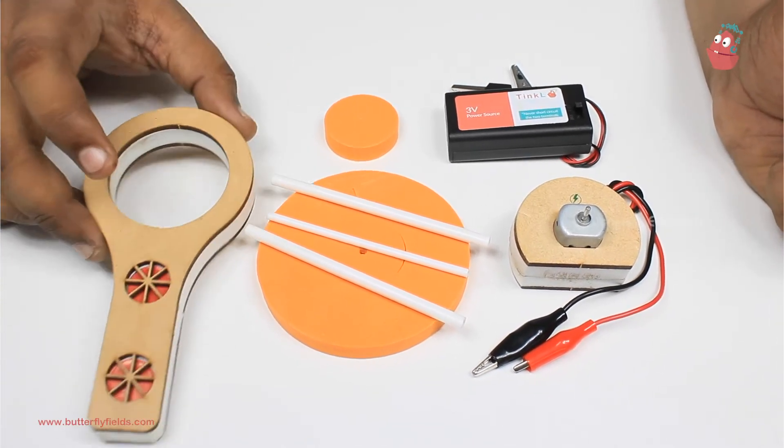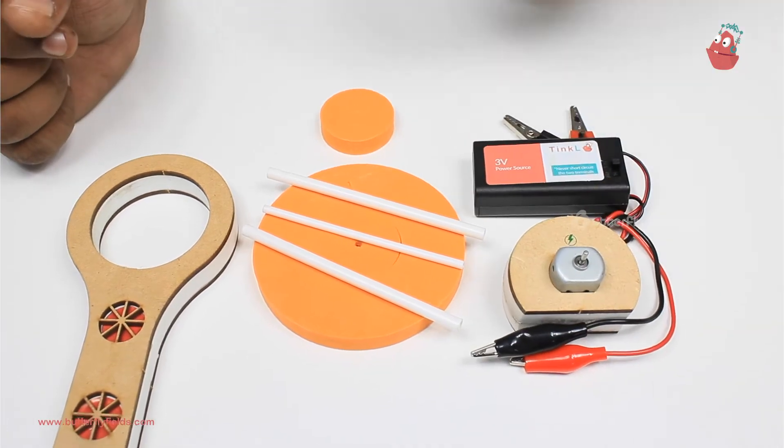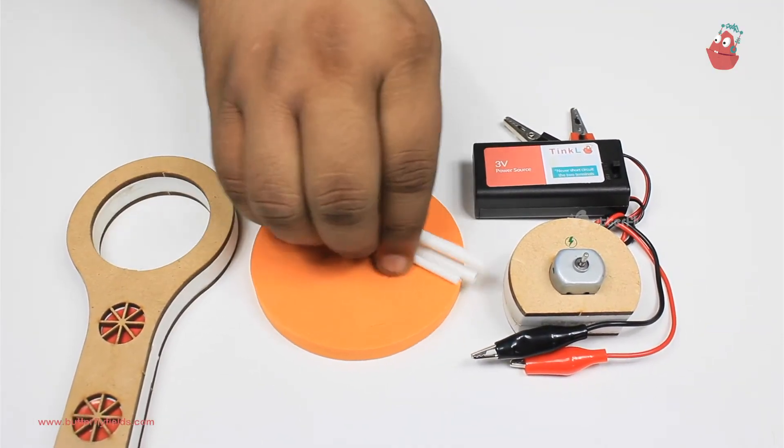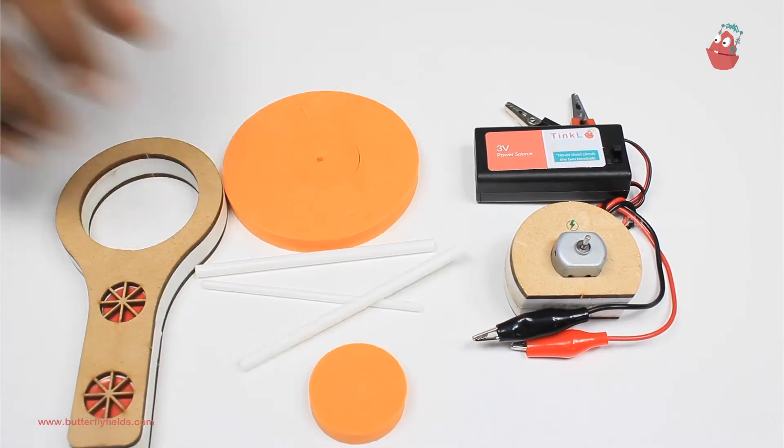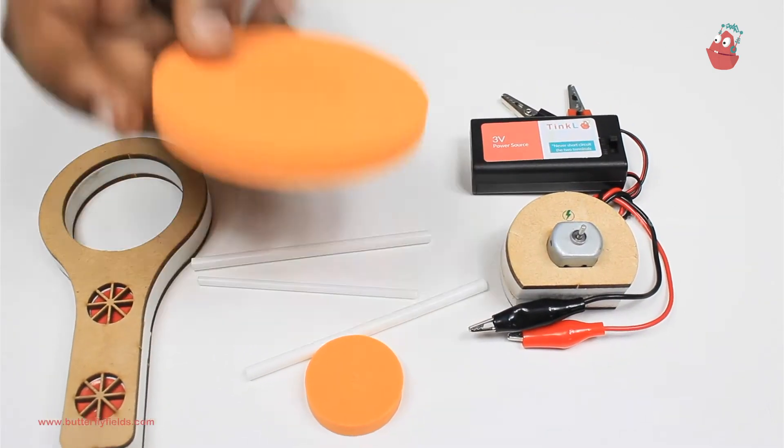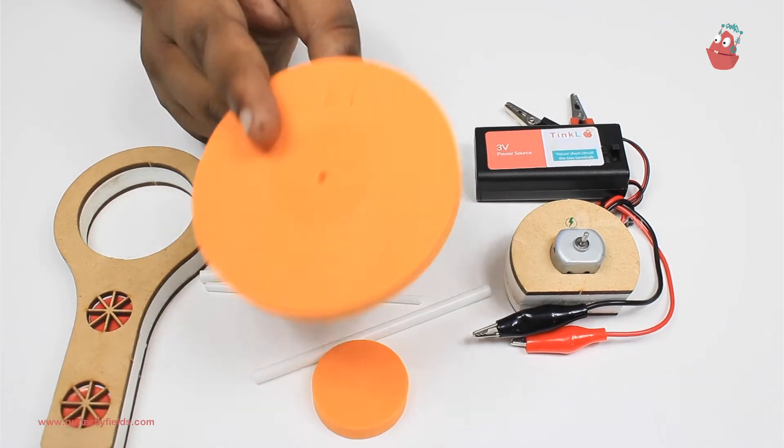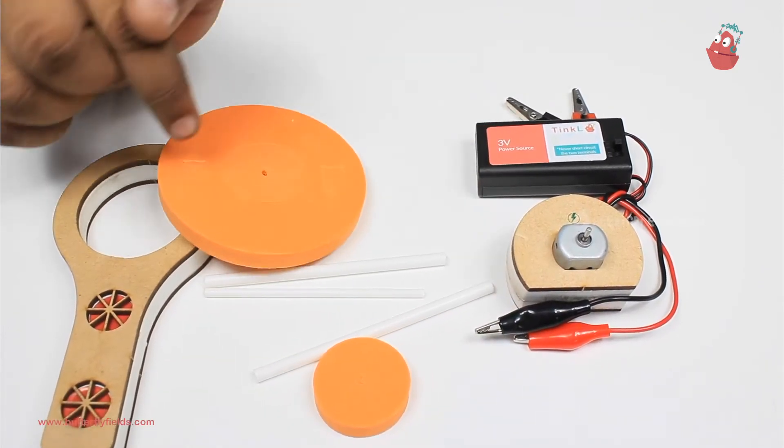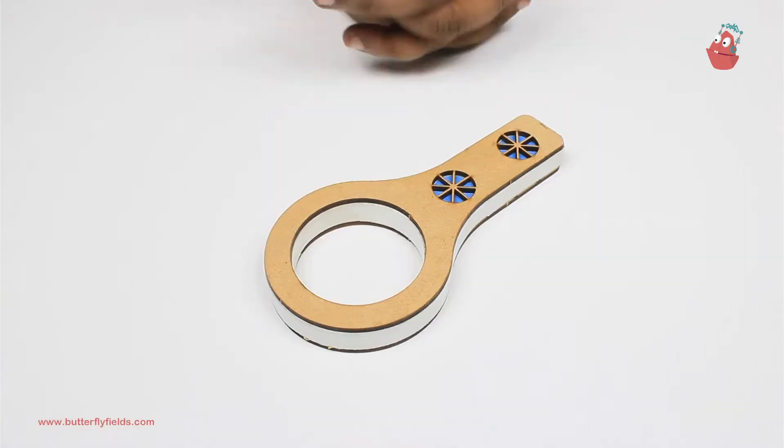You can get the lollipop bit, the motor bit, the power source for it, and you will need these three straws and this foam circle which you will get in box number four. You will need this larger circular disc which we also use for centrifuge mania, which will get in the larger foam board.